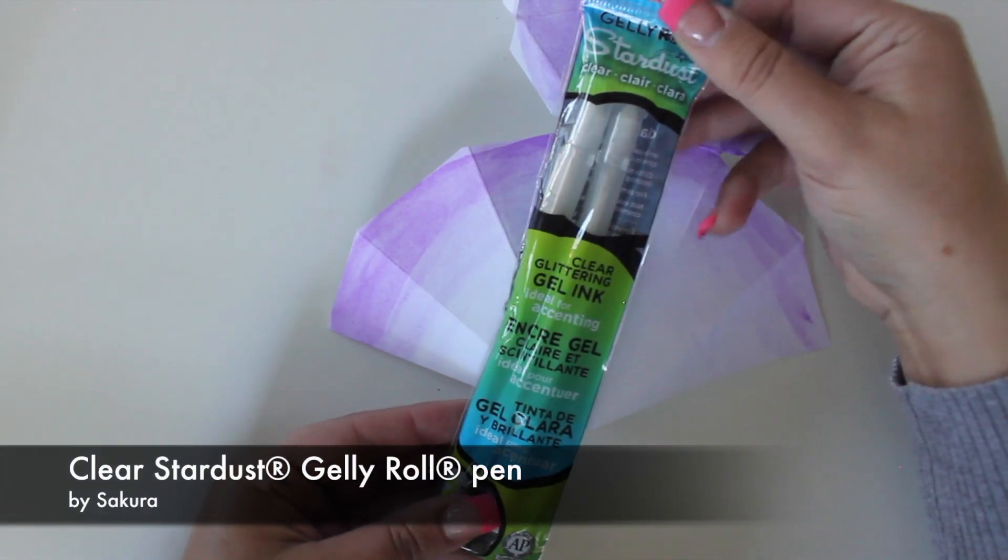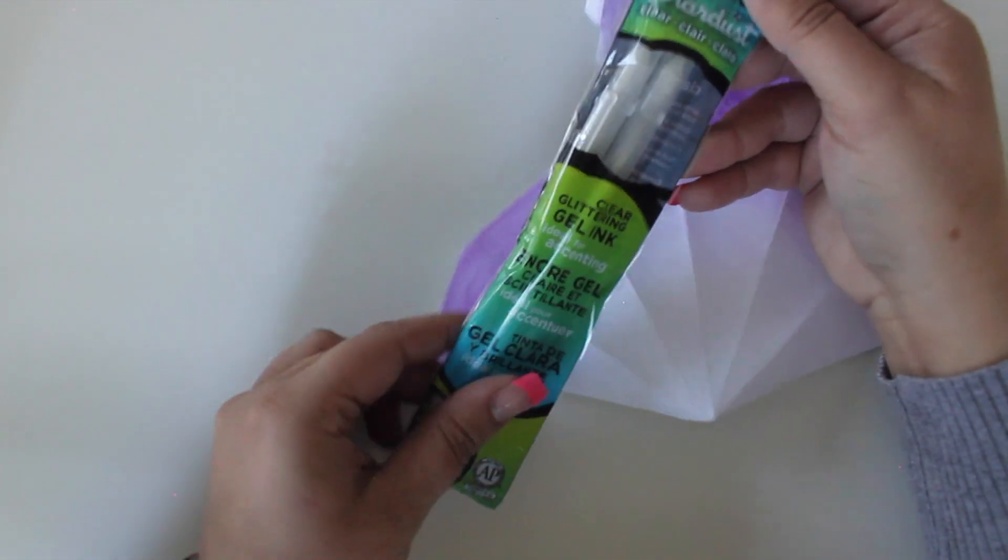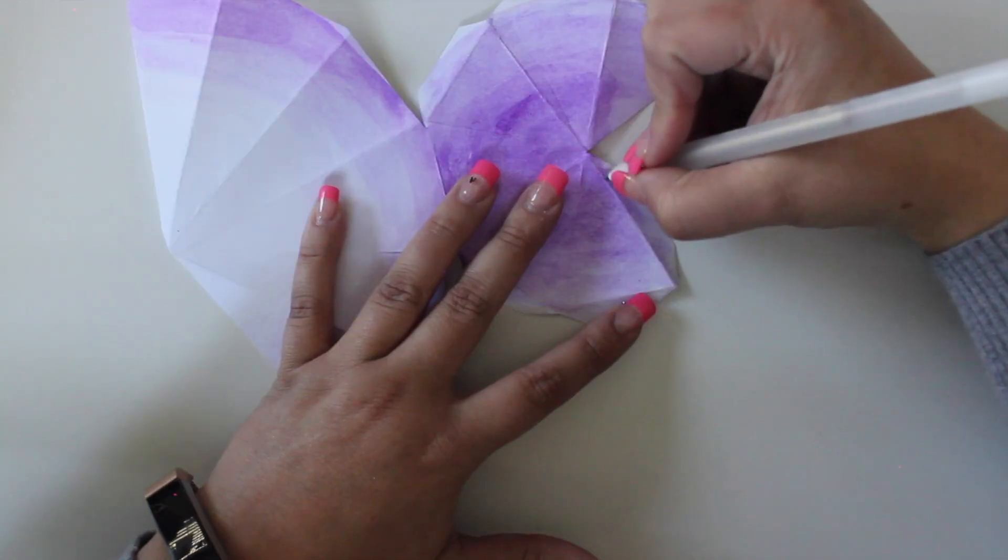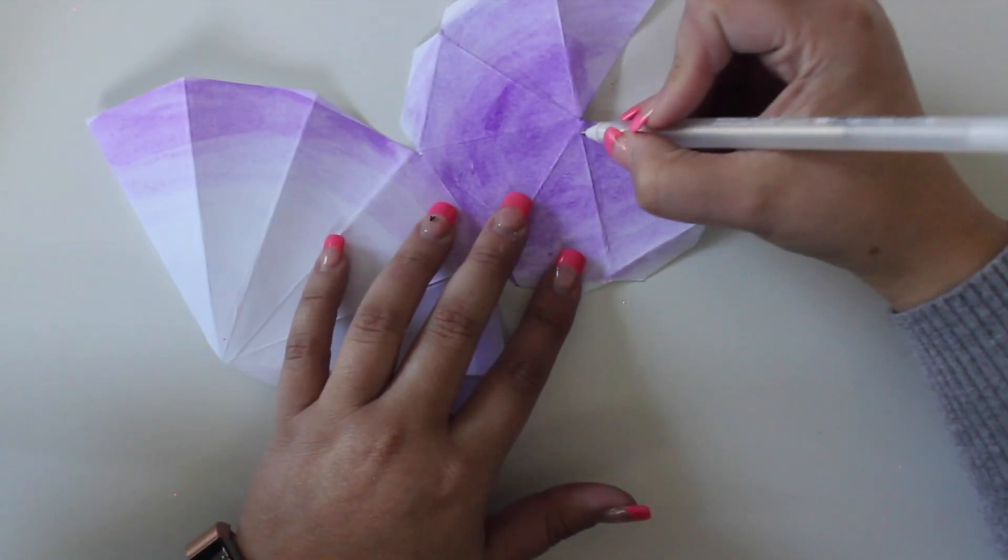If you want to add a bit of sparkle to your gems, you can trace over the creases with a clear Stardust jelly roll pen. It adds a bit of understated shimmer that's quite lovely.